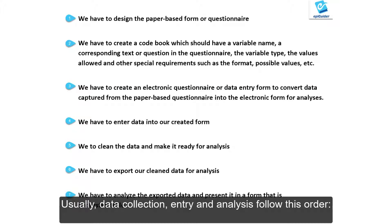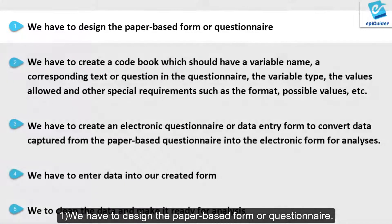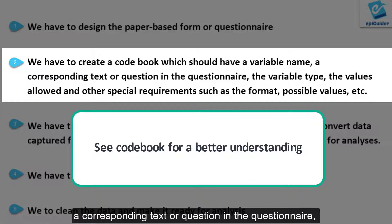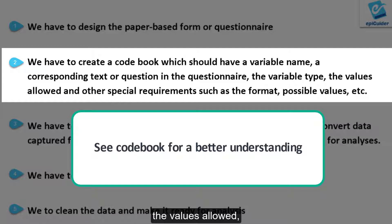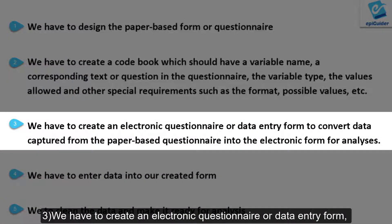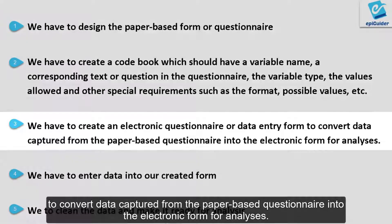Usually, data collection, entry, and analysis follow this order. First, we have to design the paper-based form or questionnaire. Second, we have to create a codebook which will have a variable name, a corresponding text or question in the questionnaire, the variable type, the values allowed, and other special requirements such as the format, possible values, etc. Third, we have to create an electronic questionnaire or data entry form to convert data captured from the paper-based questionnaire into electronic form for analysis.